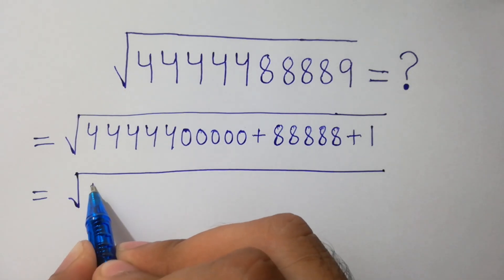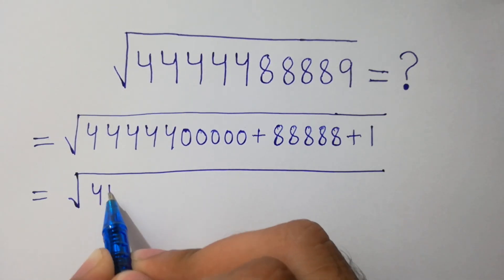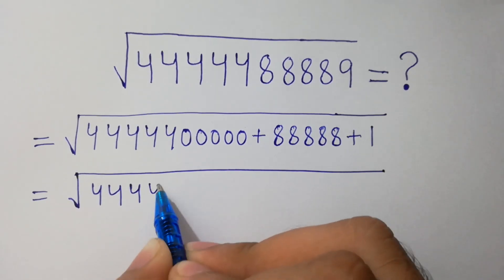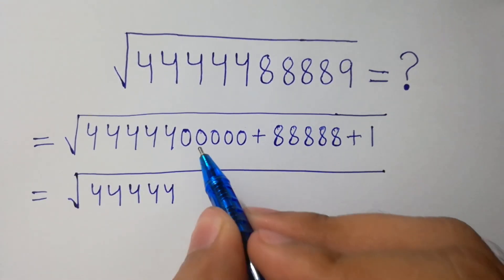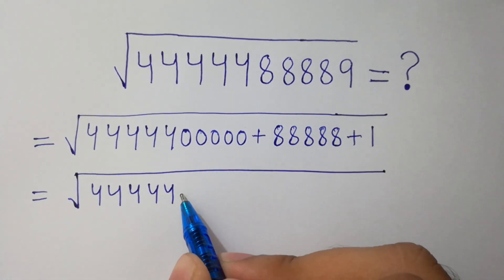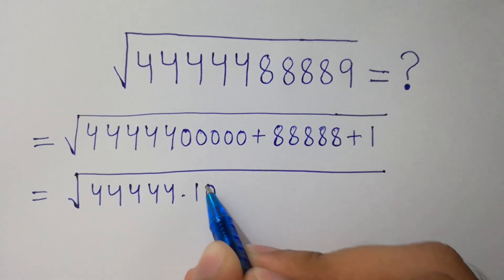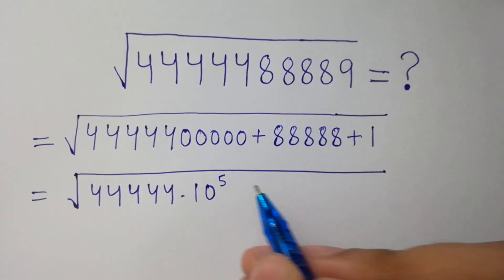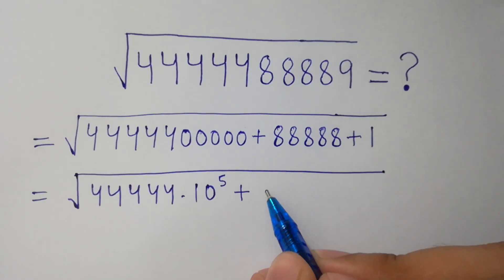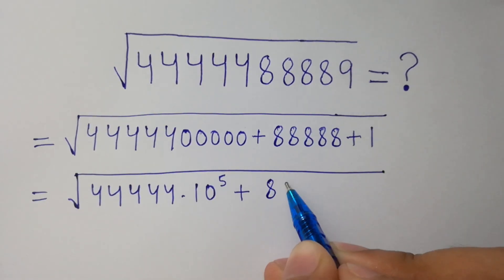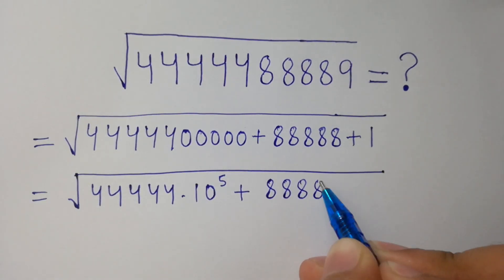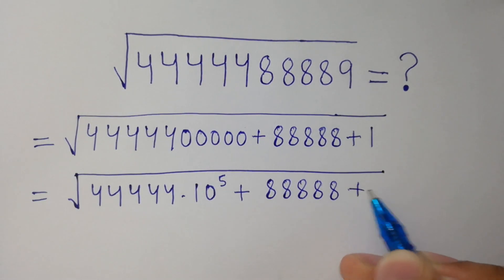Now we have 4 × 5 times 10^5, and 5 times 10^0 can be written as 10 to the power 5, plus 5 times 8 as it is times 10^5, plus 1.